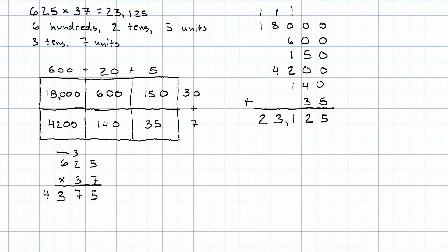Cross off the old carries. 3 times 5 is 15. 3 times 2 is 6 and 1 is 7. 3 times 6 is 18. Add it up: 5, 12, 11, 13, 2.